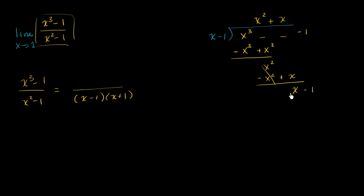x minus 1 goes into x minus 1 exactly one time. 1 times x minus 1 is x minus 1. And then you subtract, and then you have no remainder. So this numerator right over here can be factored as x minus 1 times x squared plus x plus 1.